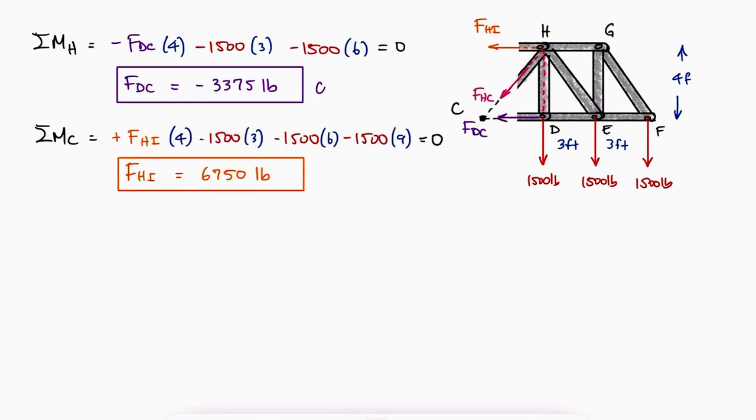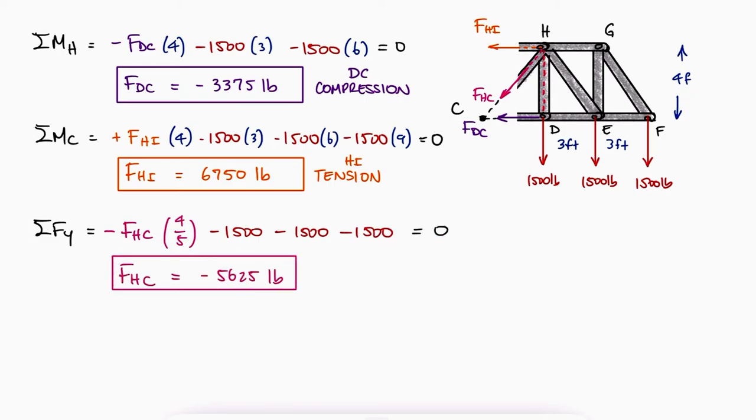Because of the positive value, HI is subjected to tension. Finally, a sum of forces in the y-direction would allow us to solve for FHC. The negative value shows us that member HC is in compression.